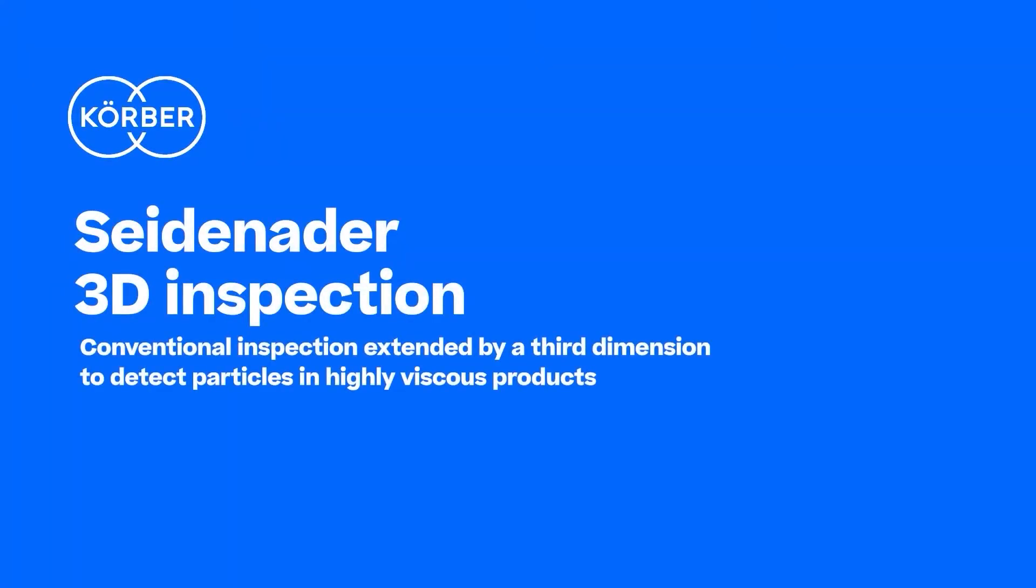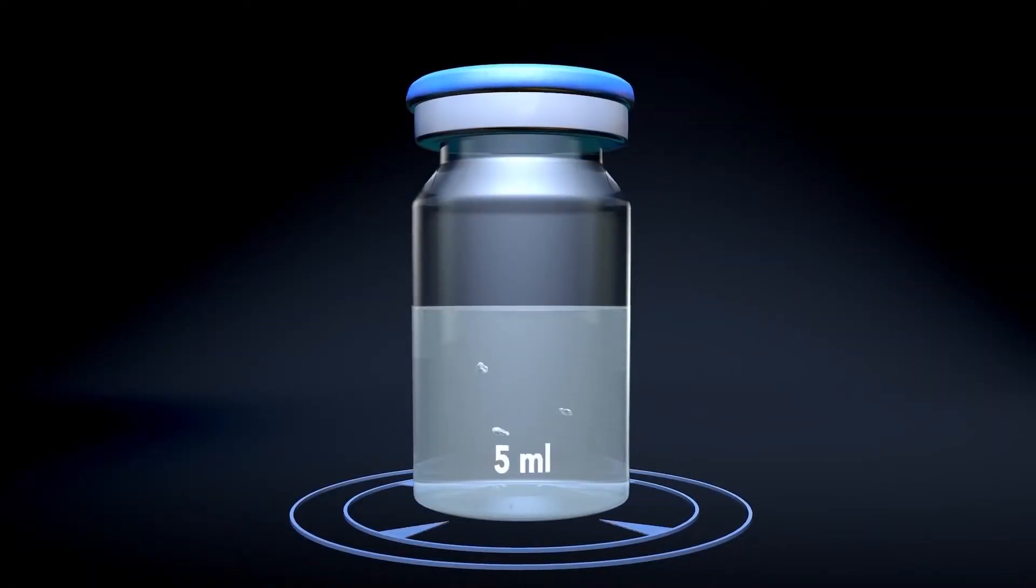Seidenader 3D Inspection: Conventional inspection extended by a third dimension to detect particles in highly viscous products. Inspecting highly viscous products can be quite challenging since reliable detection of particles with common inspection methods works only for liquid products.